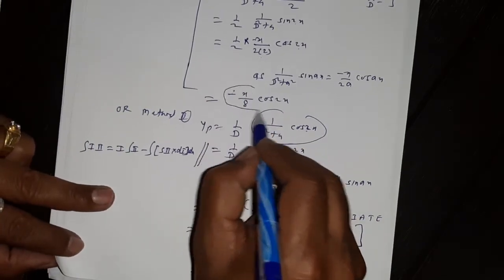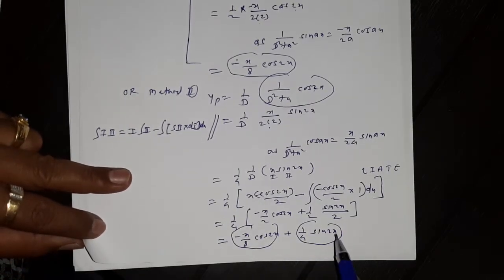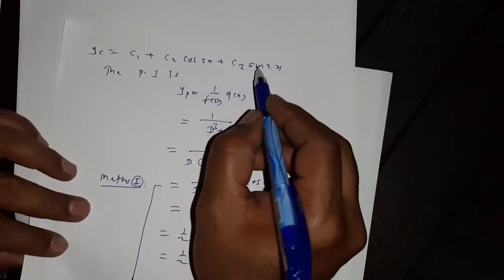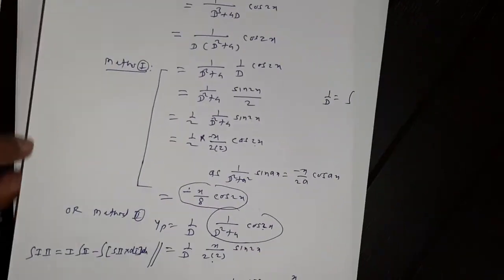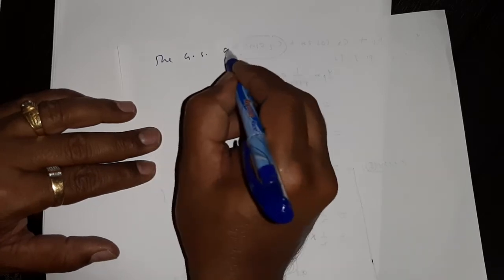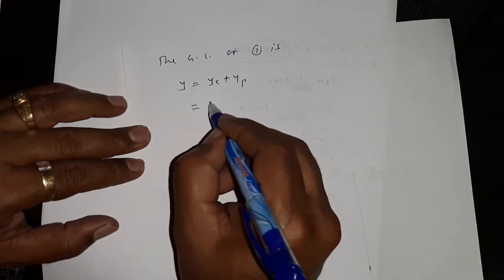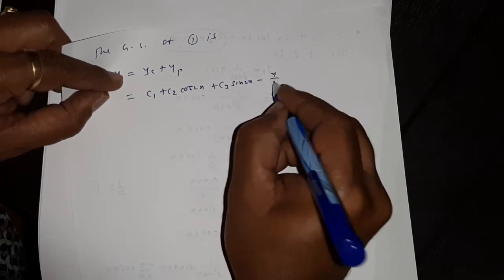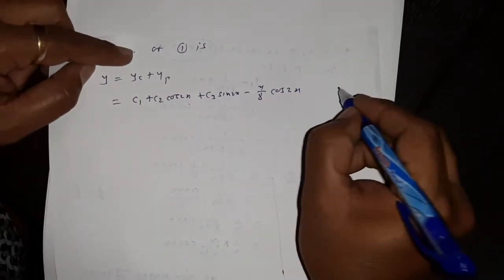The extra term 1/8 · sin(2x) from Method 2 merges with the complementary function term c₃sin(2x). Taking sin(2x) as common, we have (c₃ + 1/8)sin(2x). This is a new constant c₃'. So the general solution of the equation is y = y_c + y_p = c₁ + c₂cos(2x) + c₃sin(2x) - x/8 · cos(2x), by Method 1.